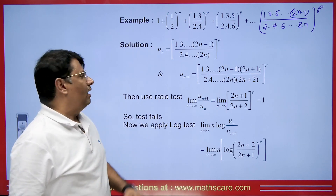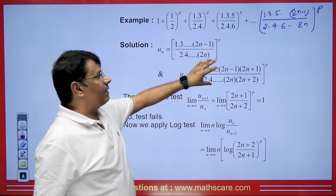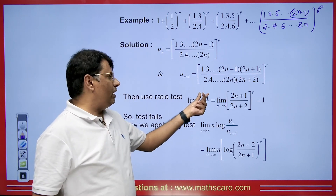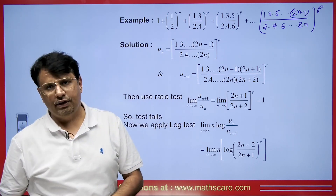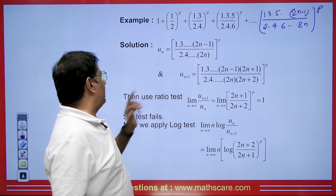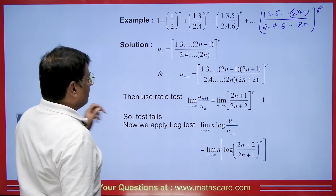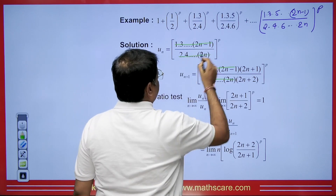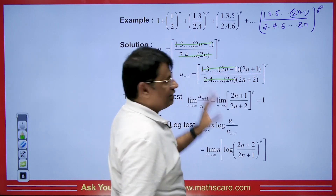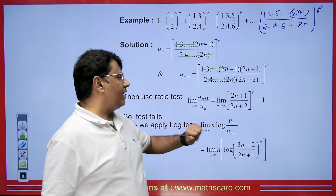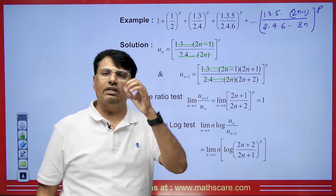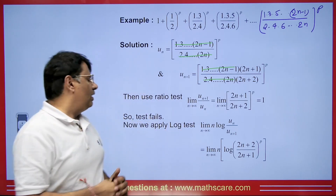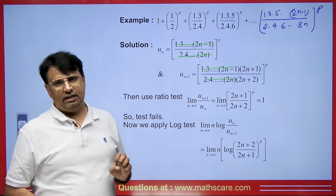We will apply the D'Alembert ratio test. So in this ratio test, this is U_n and this will be U_{n+1}. We find the limit n→∞ of U_{n+1}/U_n. When we calculate its value, you can see that U_{n+1} and U_n share common terms that cancel out. Since both have the same degree, keeping n→∞, its value will come to 1 — and it means this test will fail. If the test fails, we apply the log test.